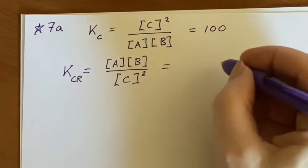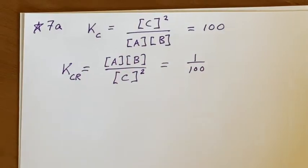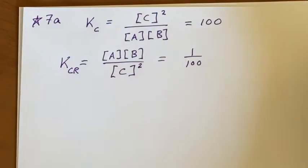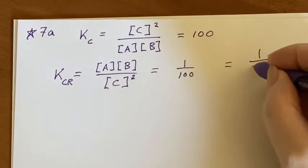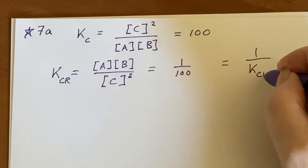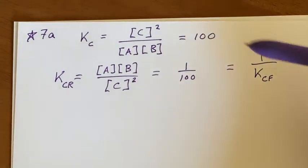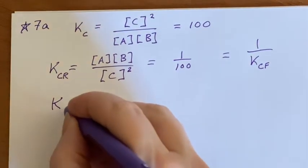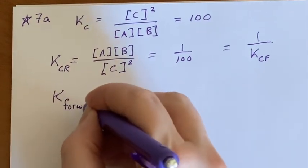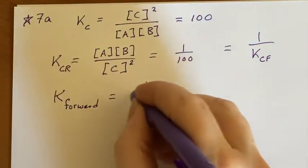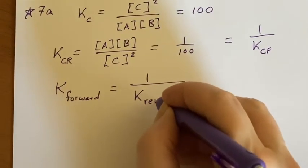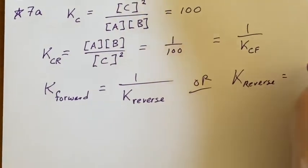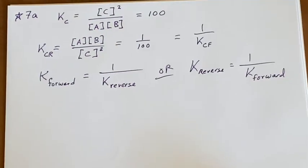Well, let's turn the 100 upside down. Boom, there it is. So this is how we can do a manipulation. This reverse one was one over the K sub C that was for the forward direction. Just flip it upside down because you're going backwards, and we can generally say that K for the forward direction will be one over K in the reverse direction, or vice versa. K reverse equals one over K forward.